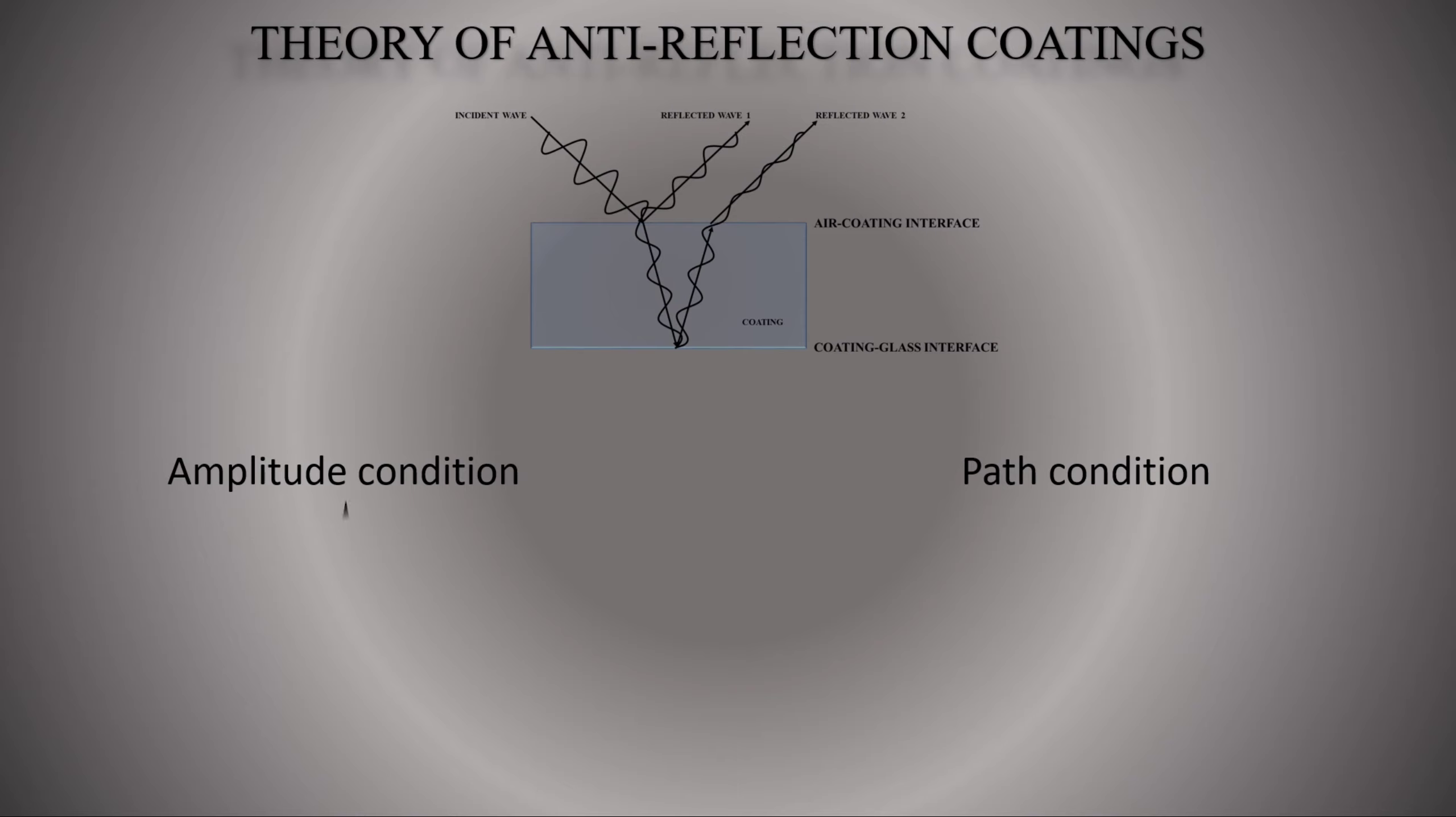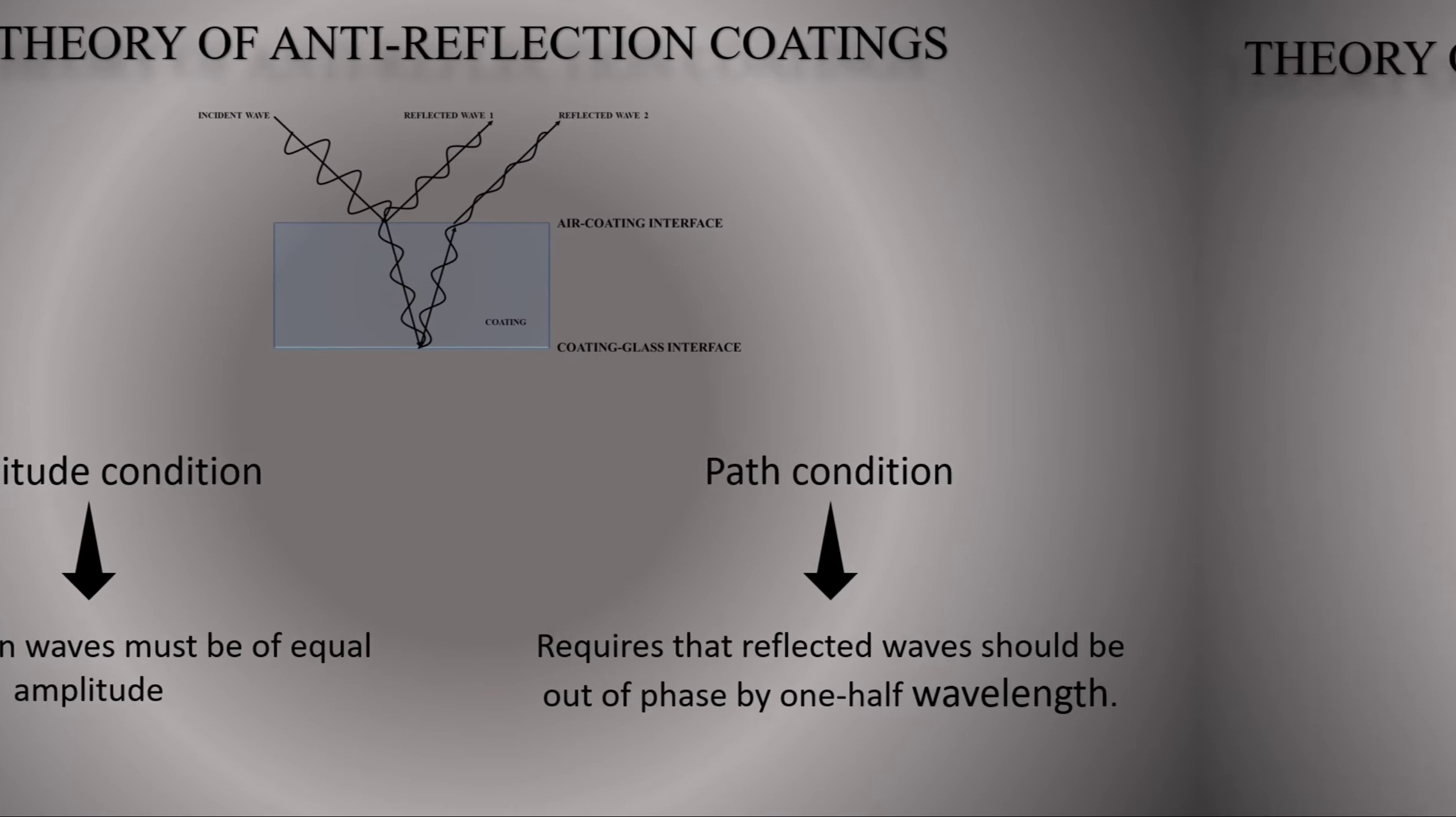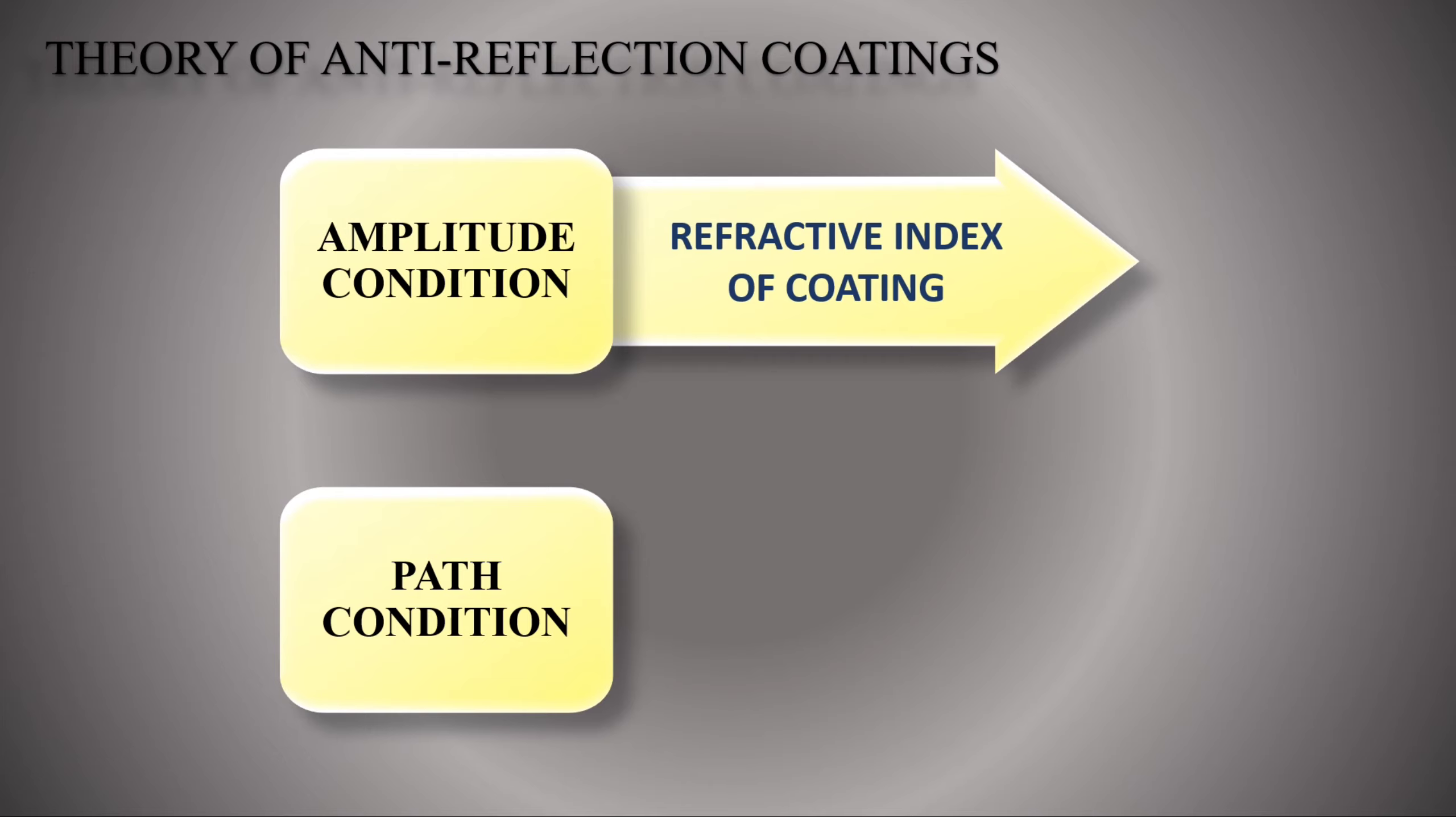For amplitude condition, two reflection waves must be of equal amplitude. Path condition requires that reflected waves should be out of phase by one half wavelength. Examination of the amplitude condition will tell us the index of refraction of the coating and the path condition will reveal the proper thickness of the coating.